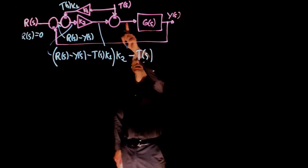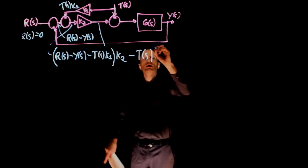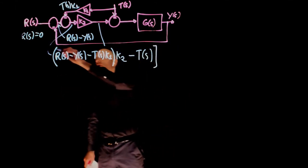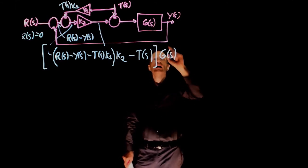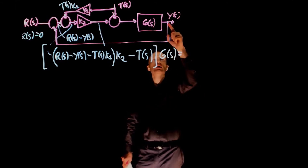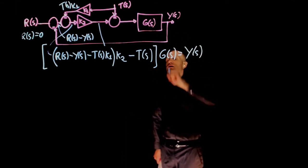The signal here times G now gives the transfer function, the relation to y. So at this point we have this expression. Passing that through G is equivalent to multiplying everything by G of s. And that is equal to the signal here, which is y of s. The signal at this point passed the block.